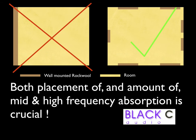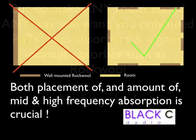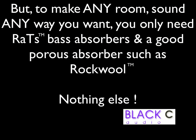But be aware, when you cover this material it will alter its absorption characteristics. And also be aware that placement within the room is crucially important. To just effectively park a lorry load of rockwool in a corner or at one end of a room will not make it work. However, to make a room sound absolutely any way you want, all you need is these two treatment elements: a good, preferably tunable bass absorber and a good porous absorber. Use enough of them in the right place and you can obtain exactly what you want.